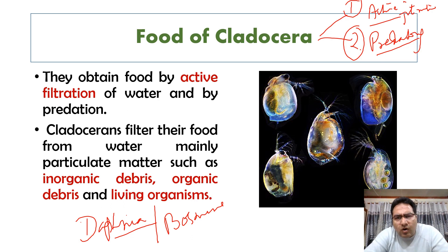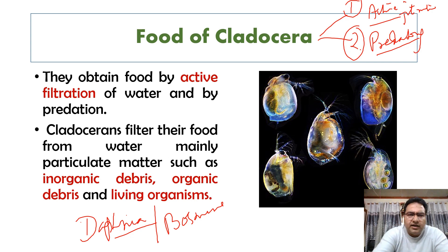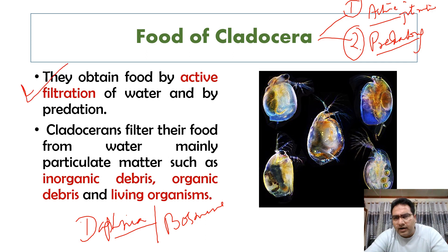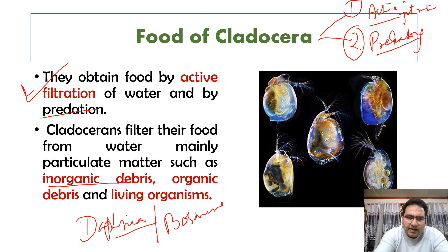Daphnia and Bosmina fed on ordinary pond debris, even algae, carmine, and finely divided humus — indiscriminately filling their digestive tract with this mixture. Some cladocerans obtained food by active filtration of water, while others obtained food by predation. Cladocerans filter their food from the water mainly as particulate matter, such as inorganic debris, organic debris, and living organisms.